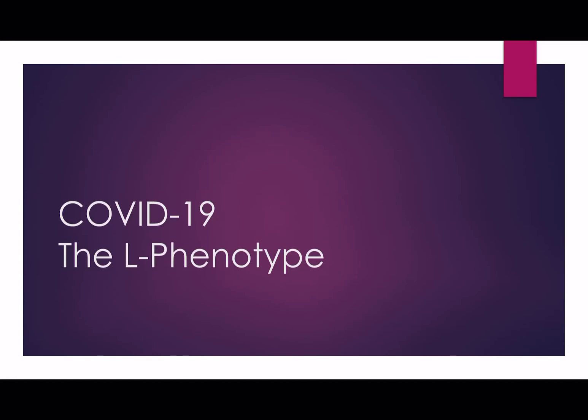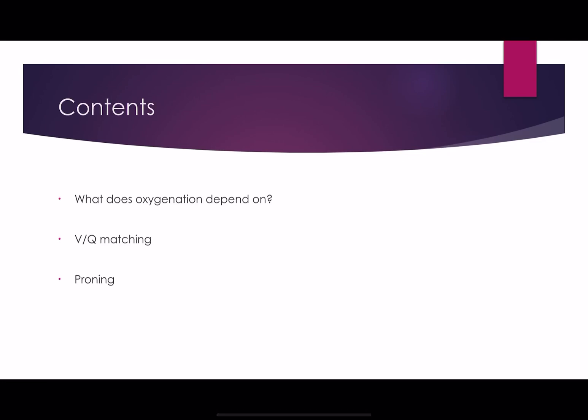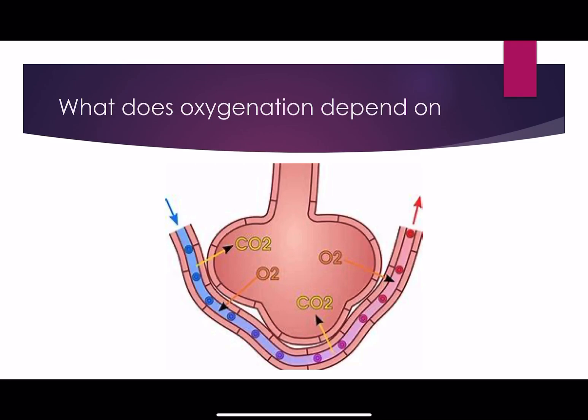Welcome to another Edumet video. In this video we're going to be talking about one of the two phenotypes of COVID-19 that seem to be coming out in critically unwell patients. This is the L phenotype, or the low phenotype. We'll talk about what oxygenation depends upon, the pathology and pathophysiology of the L phenotype, VQ matching, how to treat it, and especially thinking about proning. Before you watch this video, it's worth watching my video on why patients with COVID-19 are hypoxic, and also my series on the basics of ventilation.